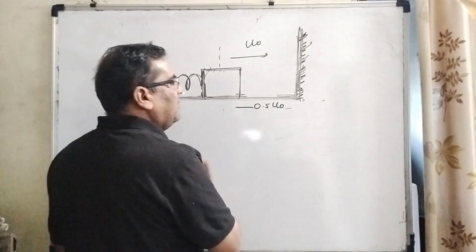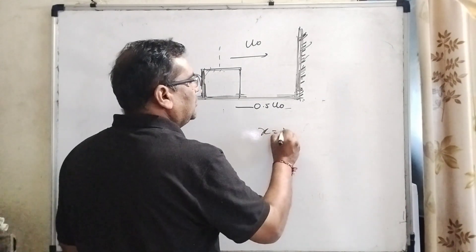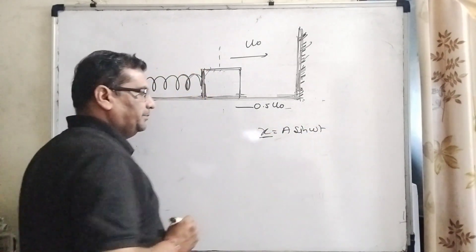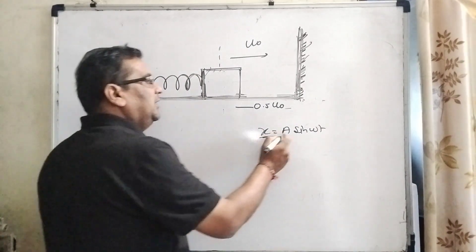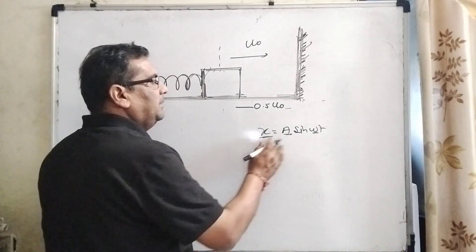What is the equation of oscillatory motion in the form of displacement? x equal to a sine omega t. Here x is displacement, a is the amplitude, and omega is the angular velocity.